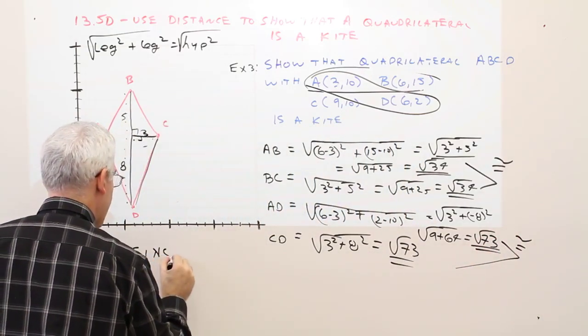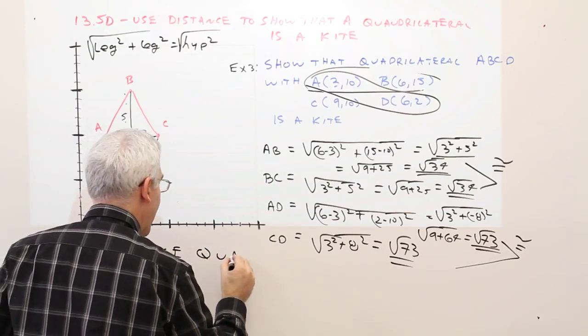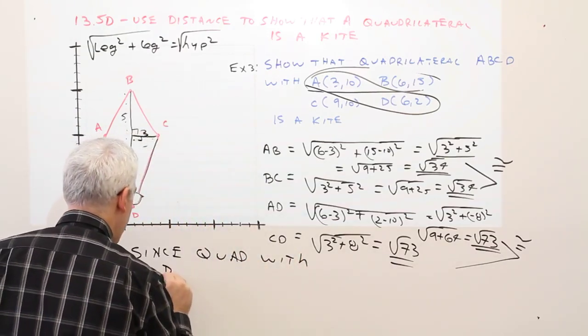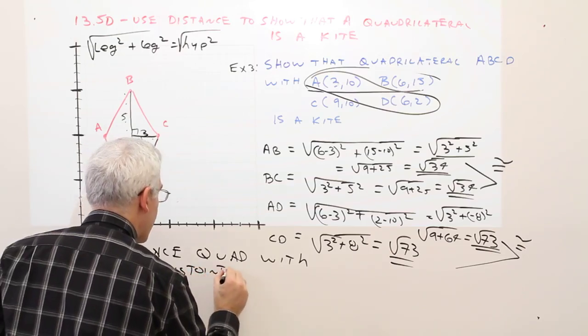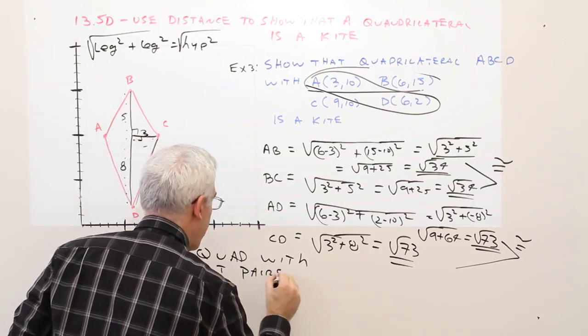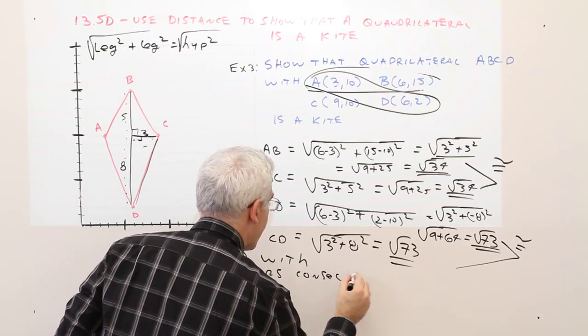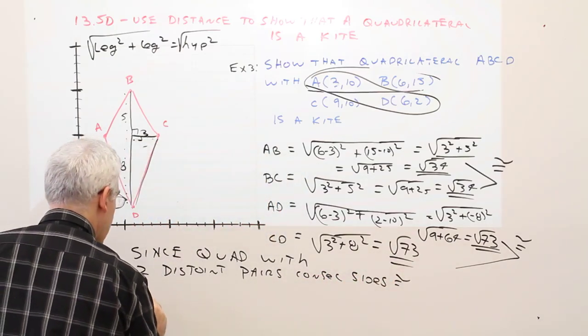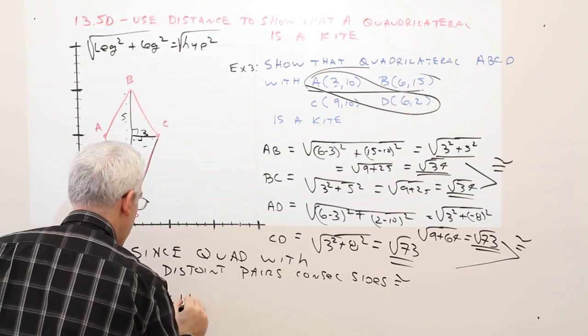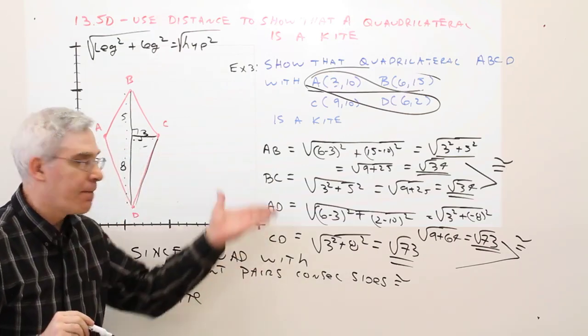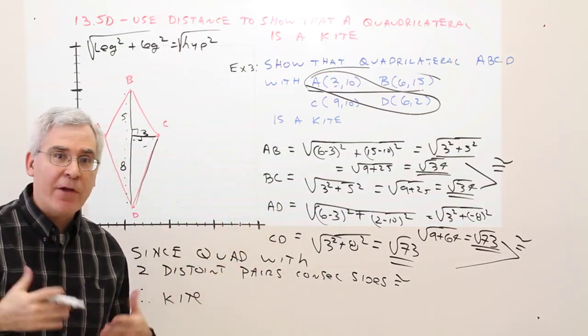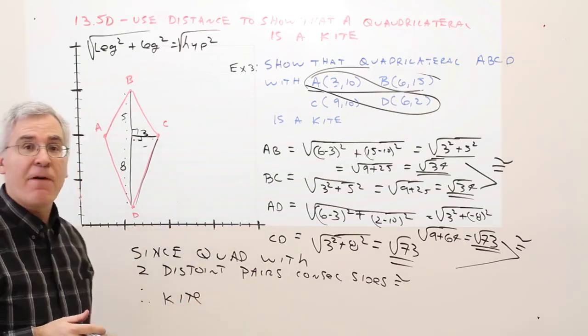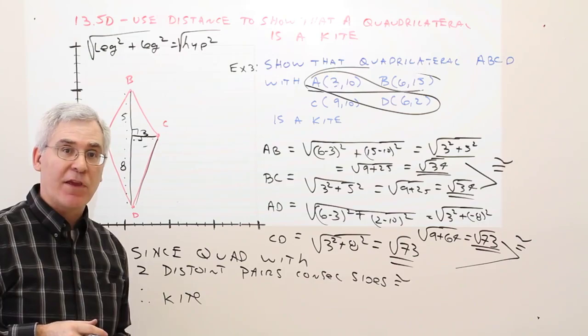So since we're a quadrilateral with two disjoint pairs of consecutive sides congruent, therefore it's a kite. And there you have it. How to use distance to verify that a quadrilateral is a kite.